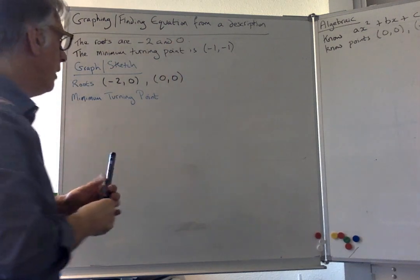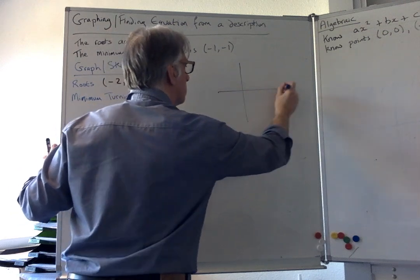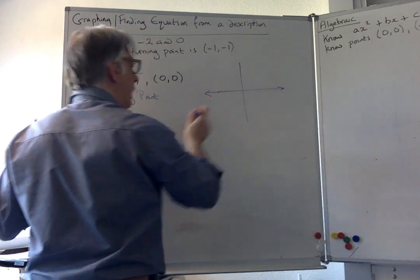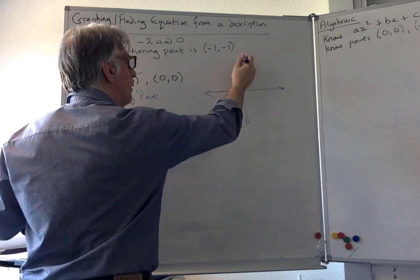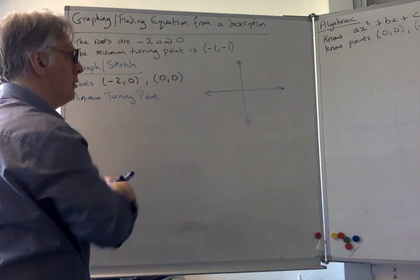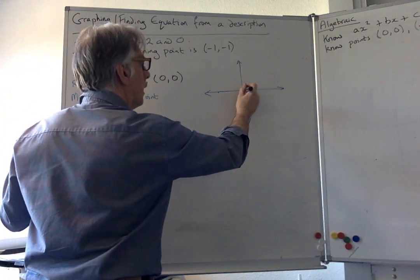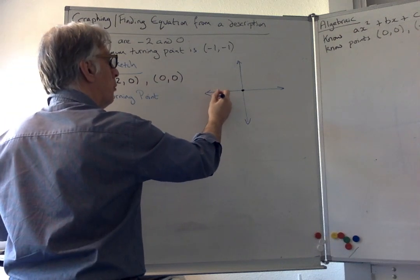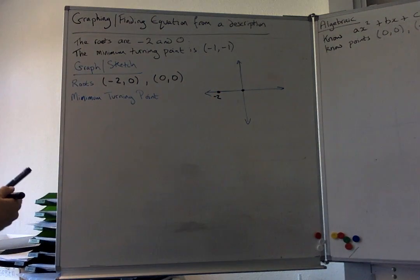So if I draw myself some axes, I'm not going to do it to scale, but you want to make it look reasonable. So that's that one, this one is obviously over here, and I've put minus two there so people know what that number is.